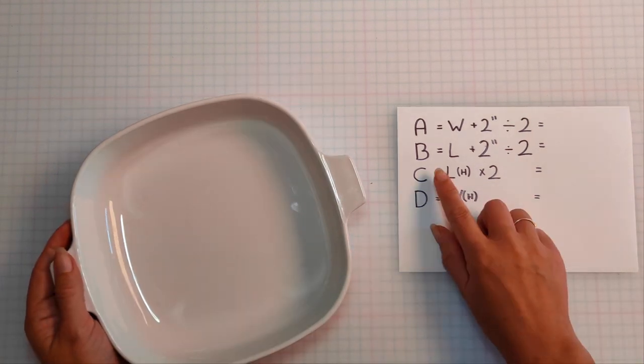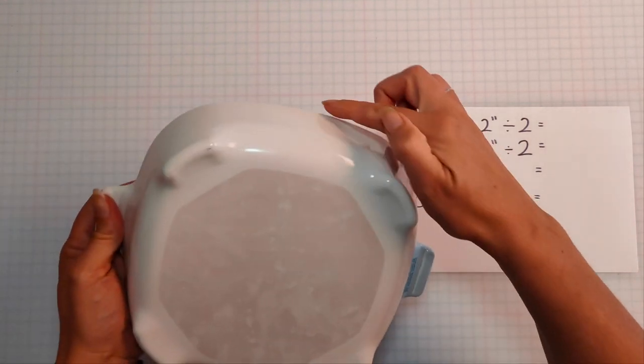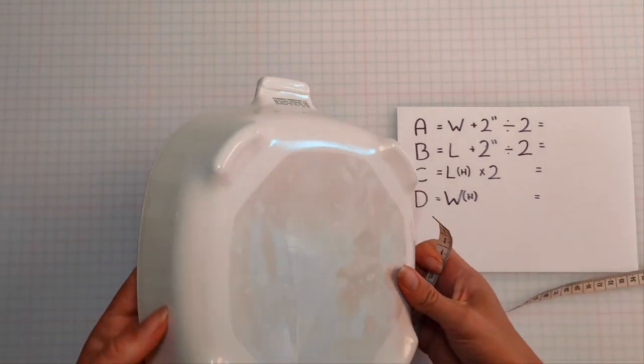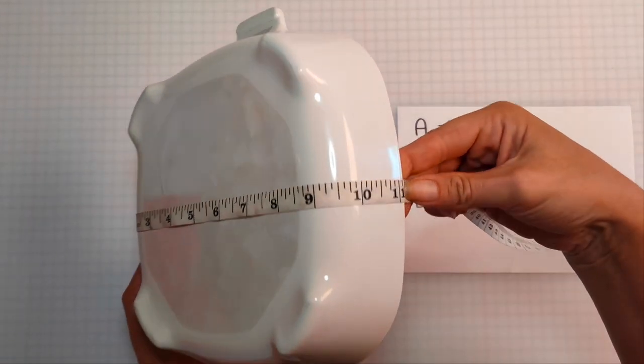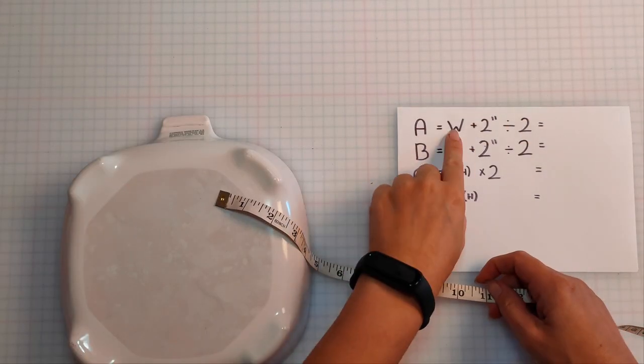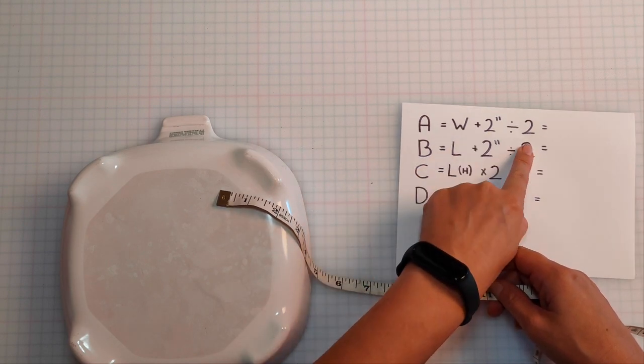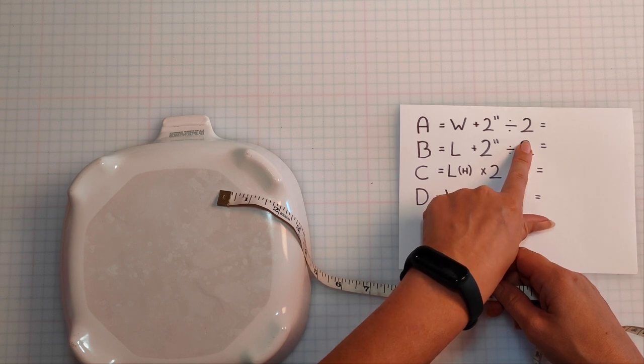First measurement labelled A is going to be the full width of your casserole dish. Mine is 11 inches. I'm going to take my 11 inches plus 12 takes me to 13 and then divided by 2 takes me to 6 and a half.